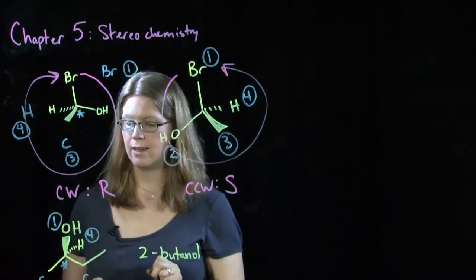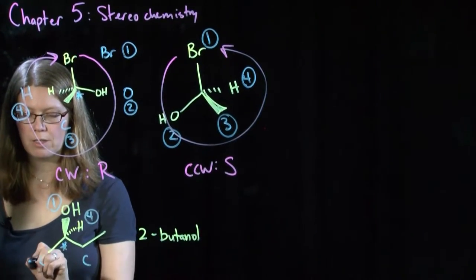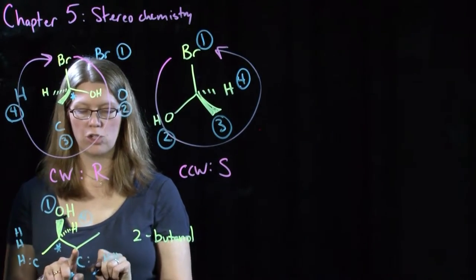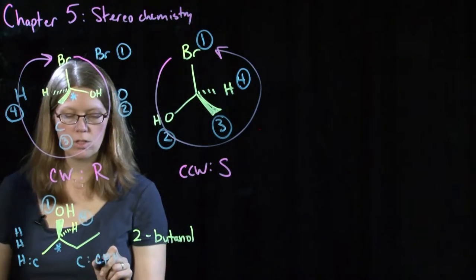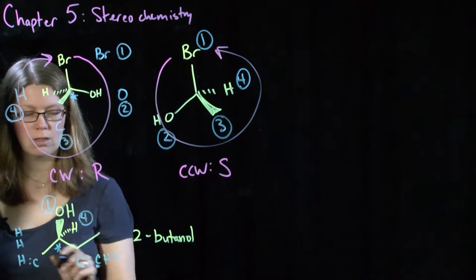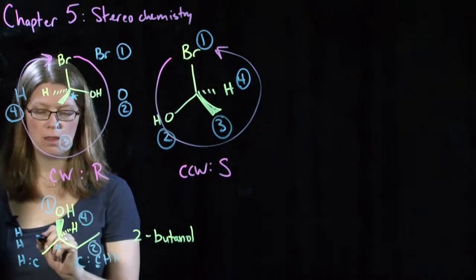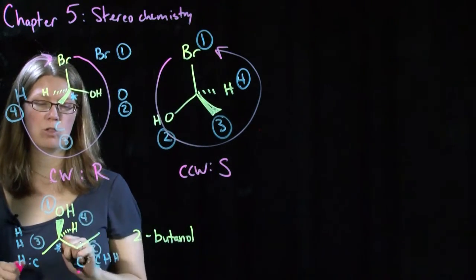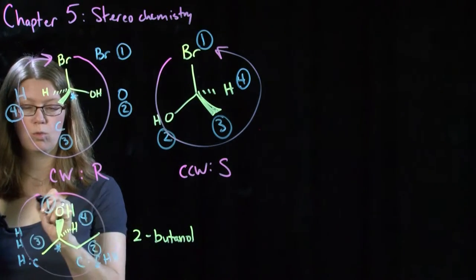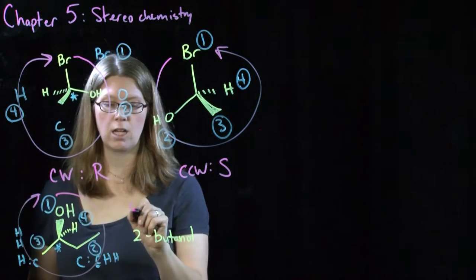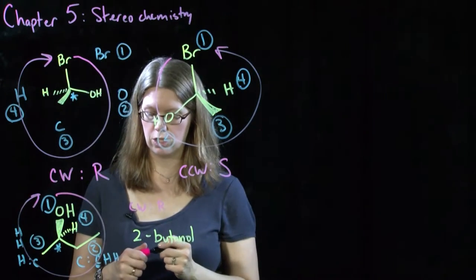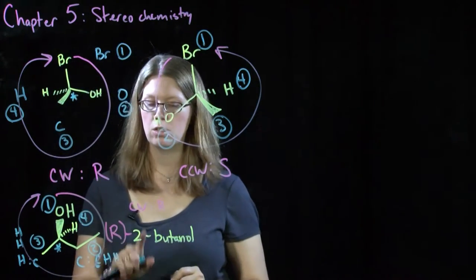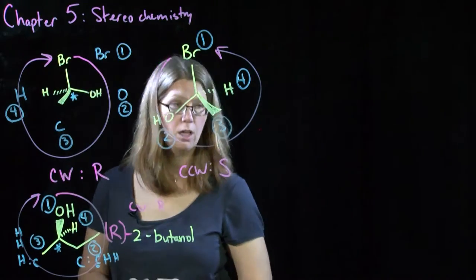What about the two carbons? This carbon has three hydrogens attached to it (a methyl group), while this carbon has two hydrogens because it's a CH2 group as well as another carbon attached. So there's a point of difference: the ethyl group will have a higher priority than the methyl group. Priority number four is already placed in the back; connecting the dots between one, two, and three goes in a clockwise fashion, so this is an R configuration.